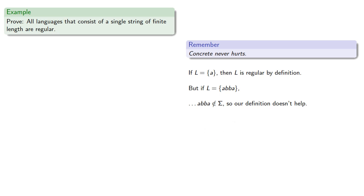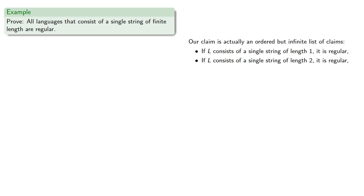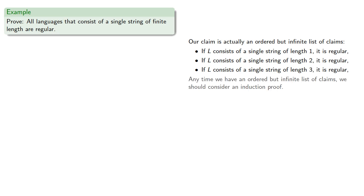So let's take a closer look. Our claim is actually an ordered but infinite list of claims: if L consists of a single string of length 1, it's regular; if L consists of a single string of length 2, it's regular; if L consists of a single string of length 3, it's regular. This observation is important because any time we have an ordered but infinite list of claims, we should consider an induction proof.